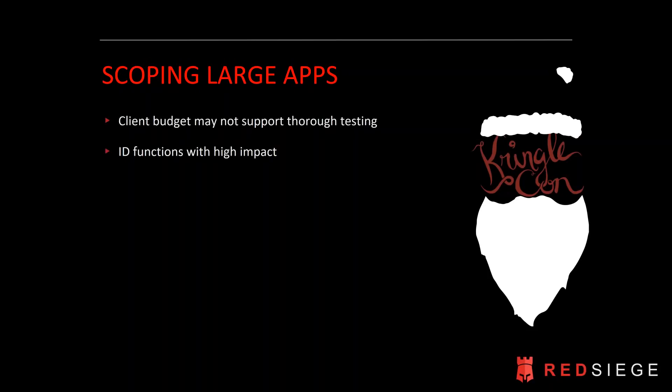That happened to me as an internal pen tester. My team sat down with the internal client and talked about a very large financial application. During discussions, we found there were actually seven or eight different applications wrapped into one, with hundreds of user roles and dozens of different types of functions within each app on the one site. Based on our assessment, we determined this would take four to six months for a team of two people to test thoroughly, end-to-end.